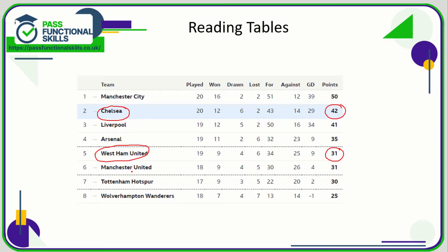We want Arsenal — how many have they played? The number that Arsenal have played is 19. Comparing that to Tottenham Hotspur, the number that they've played is 17. We can therefore say that Arsenal have played two more games than Tottenham Hotspur.